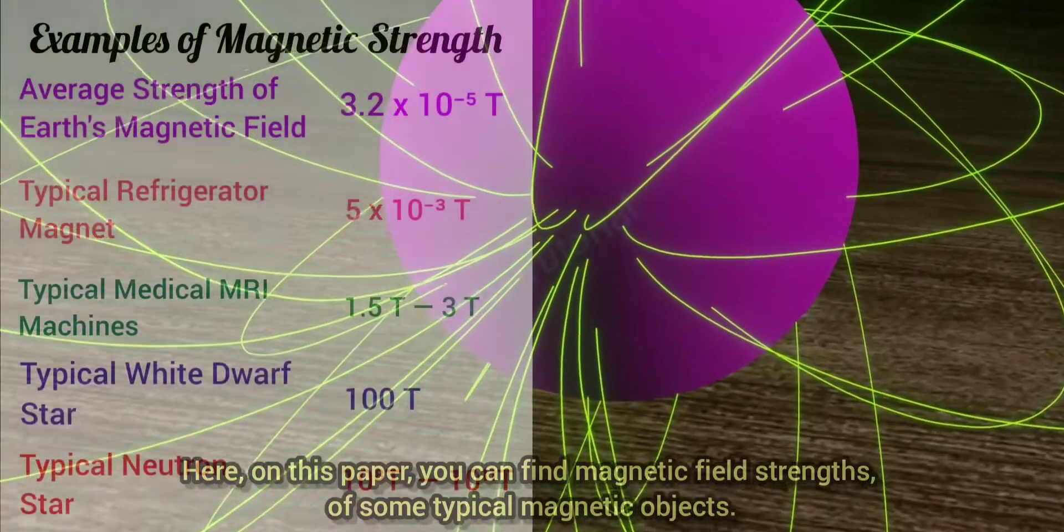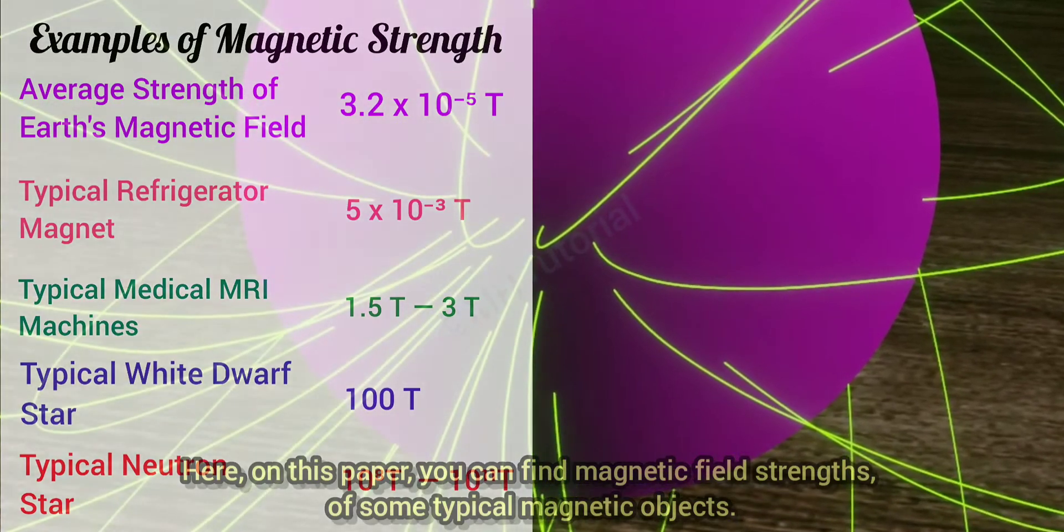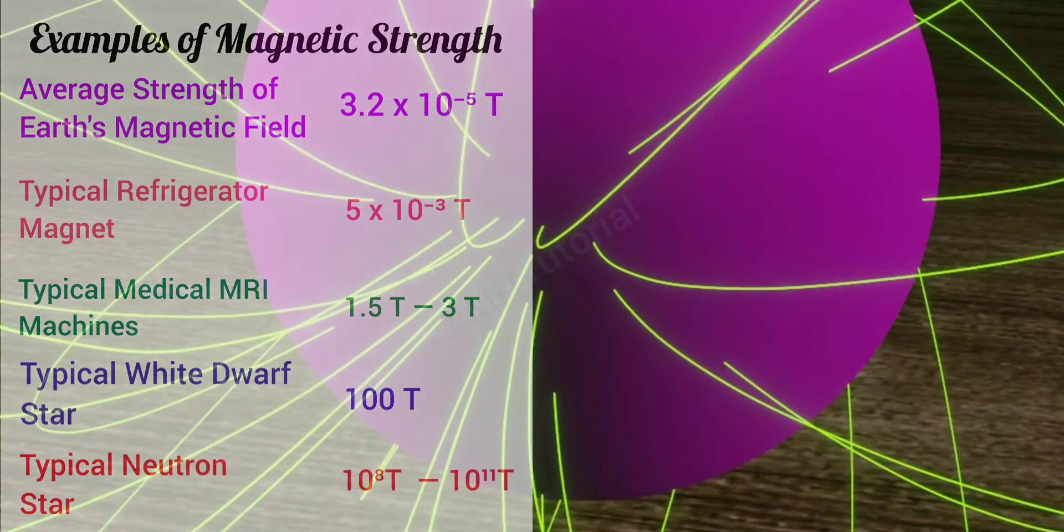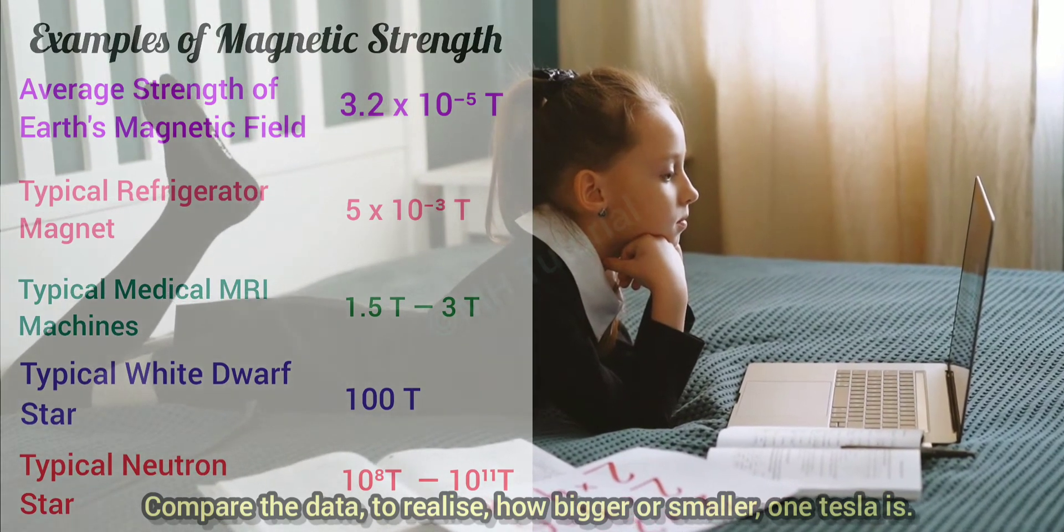Here, on this paper, you can find magnetic field strengths of some typical magnetic objects. Compare the data to realize how bigger or smaller one Tesla is.